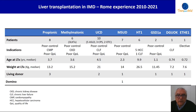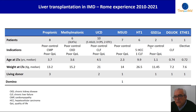Three patients with methylmalonic acidemia received a combined liver and kidney transplantation. Urea cycle diseases that underwent transplantation included five patients with argininosuccinic aciduria, three patients with CPS deficiency, and two with OTC deficiency. The indication for liver transplantation was in most cases poor metabolic control in propionic and methylmalonic acidemia, urea cycle disorders, MSUD, and glycogen storage disease, and poor quality of life — which is a very important indication, especially in pediatric patients.